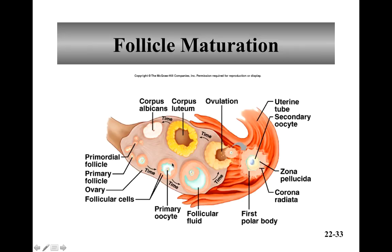Follicle maturation: at puberty, these primordial follicles are going to mature into primary follicles. One of the biggest triggers for this is the increased FSH — the follicle stimulating hormone. Cells continue to develop and mature into antral follicles. The antral follicles take about 300 days from the primordial follicle to the antral follicle forming. Only the dominant antral follicle is released, so it's an ongoing process in the ovary going from primordial follicle to antral follicles.